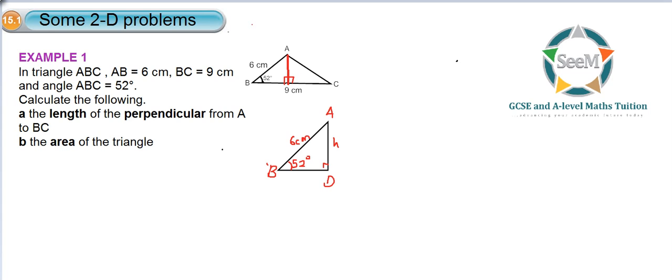Alright, so using SOCATOA. Let's see what we've been given. We've been given the opposite, which is H, H is the opposite to the angle B, and hypotenuse. So that means we're given opposite and hypotenuse.